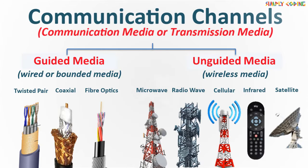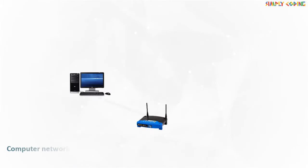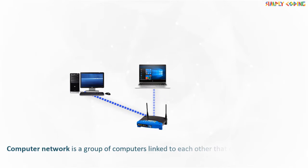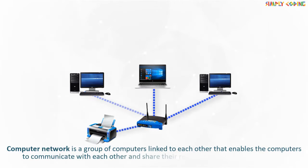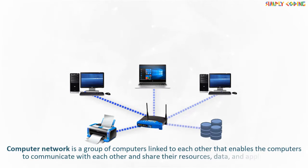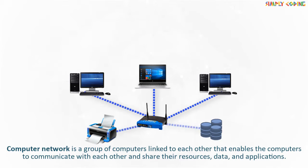Hello, in this video we are going to talk about communication channels which are used in computer networks. A computer network is a group of computers linked to each other that enables computers to communicate with each other and share their resources, data and applications.